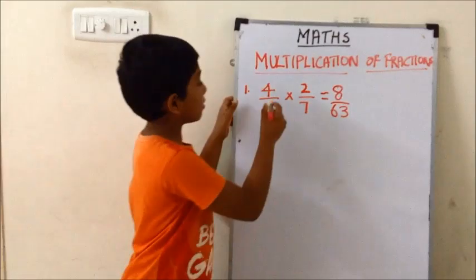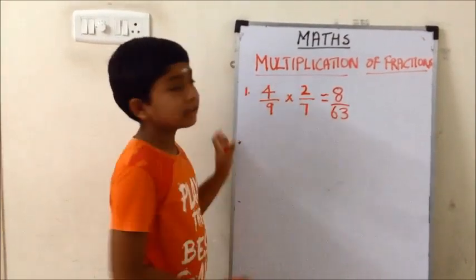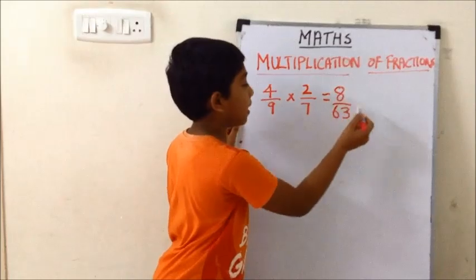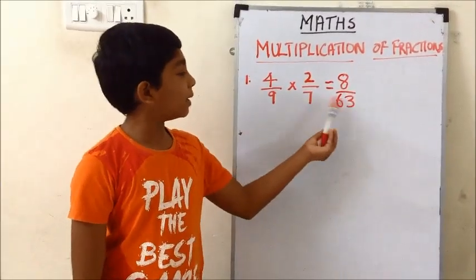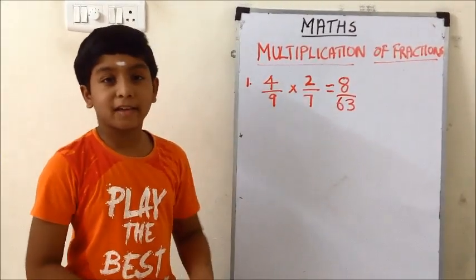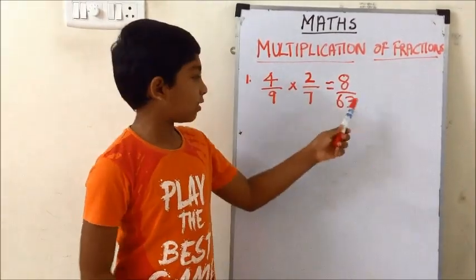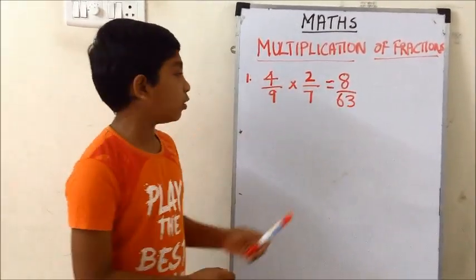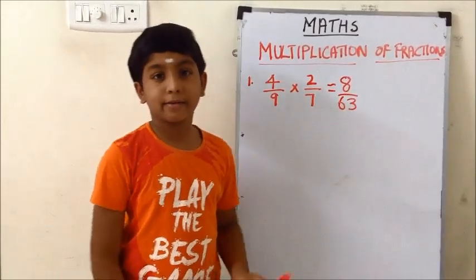So the answer for 4/9 into 2/7 is equal to 8/63. This fraction cannot be further simplified. Some fractions can be further simplified — for those we need to simplify and write the answer.